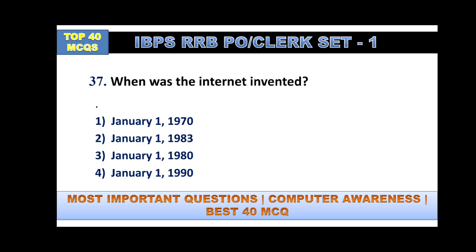When was the internet invented? The answer is January 1, 1983 — option number two.